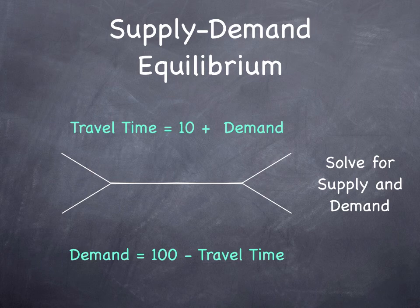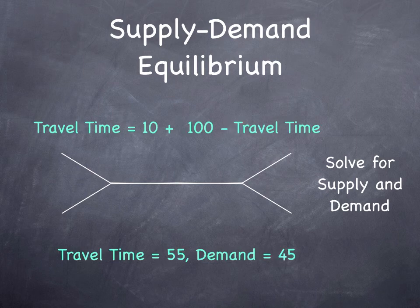You can do this analytically for a two-equation, two-unknown system by plugging one equation into the other, but if you want to do this for many equations with many unknowns, you're going to have to do this iteratively. That's the first equilibrium — supply and demand. To solve the problem with some algebra, the travel time turns out to be 55 and the demand is 45.